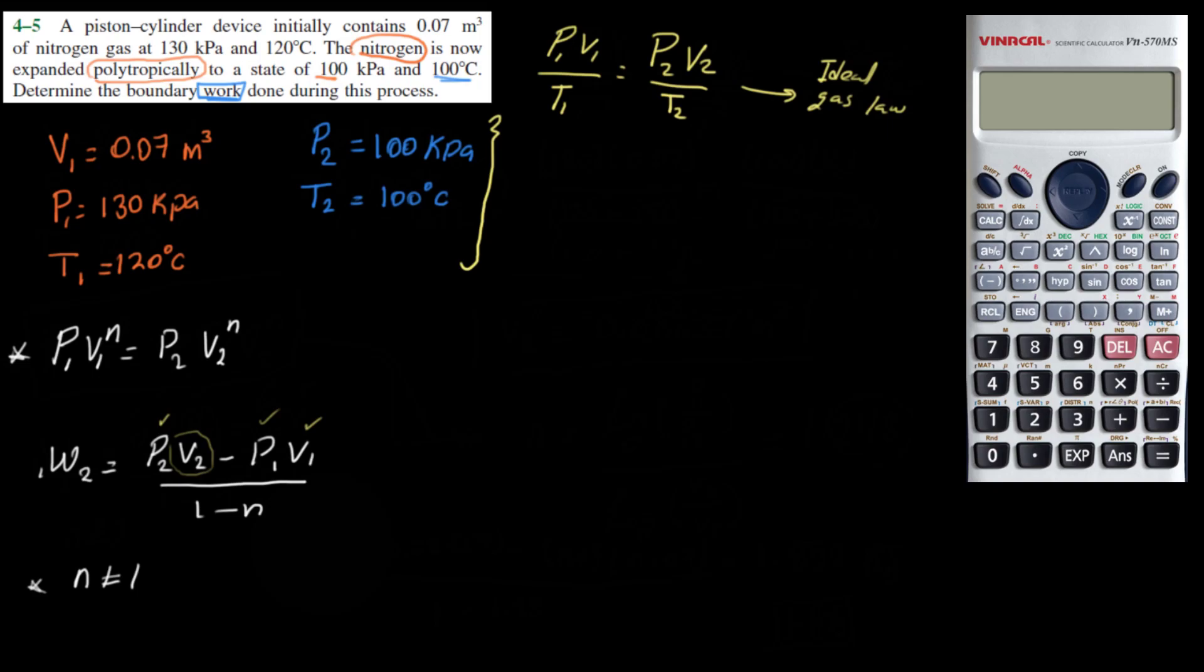So now, let's plug in the numbers because we know most of the variables here except V2. So P1, which is 130, V1, which is 0.07, T1, which is 120 degrees Celsius, but remember to add 273 degrees to there because we are dealing with Kelvin and not Celsius. Make sure to remember that, don't forget that. 100 kilopascals for P2, V2 we don't know it, and T2 is 100 plus 273, again because we are dealing with Kelvin. Let me plug in these numbers real fast on my calculator to find V2.